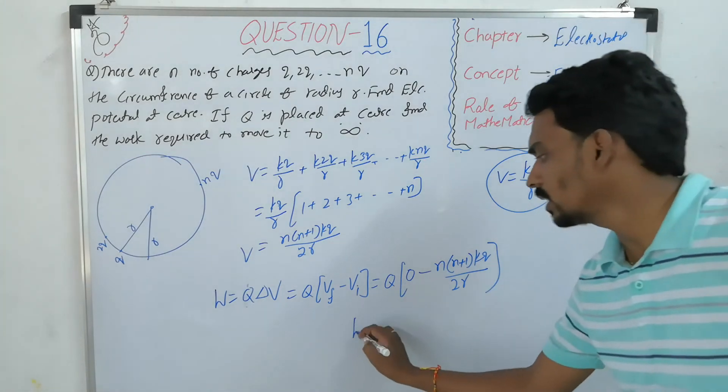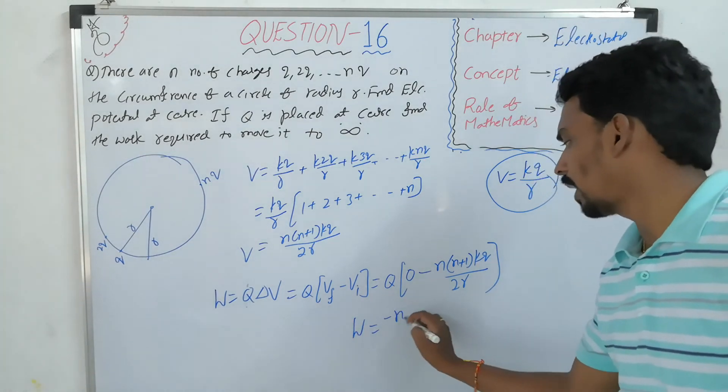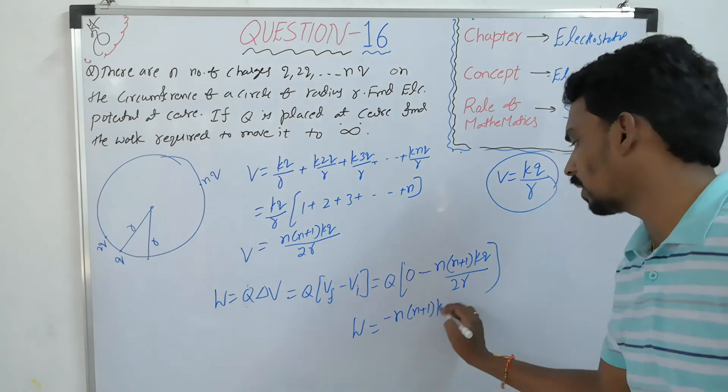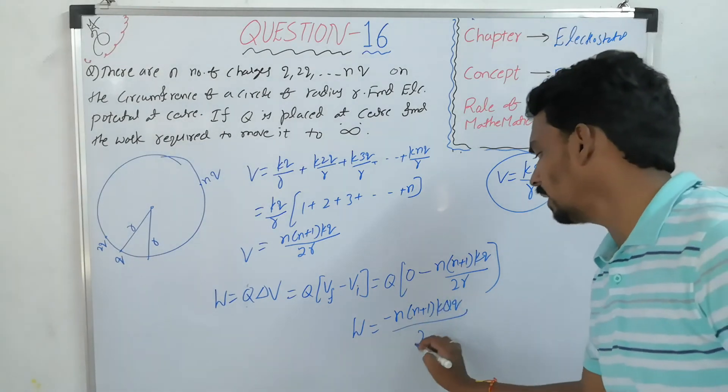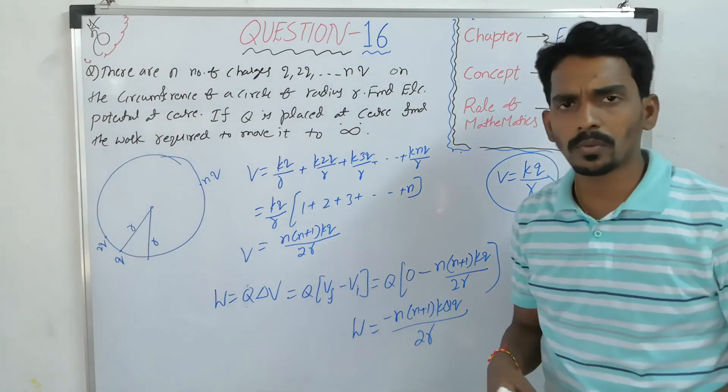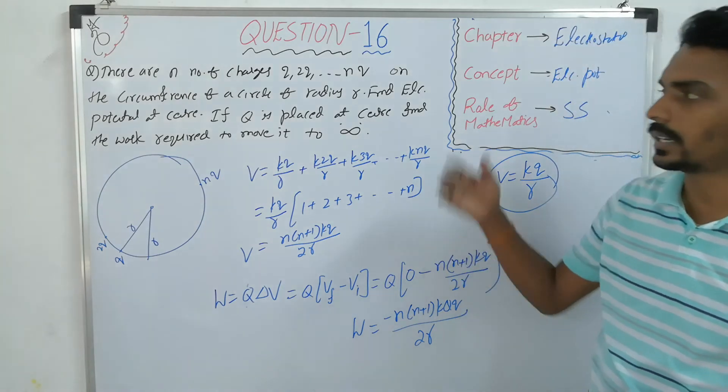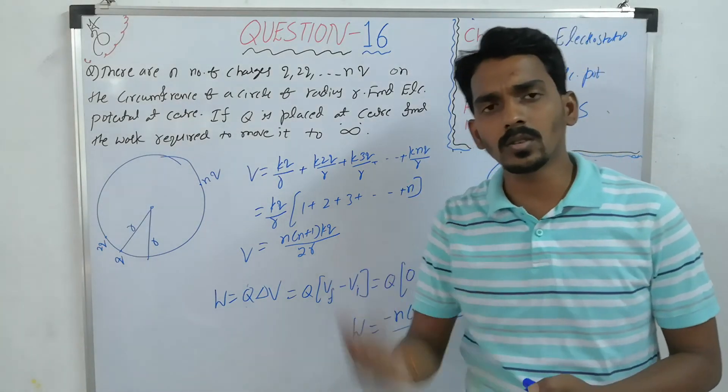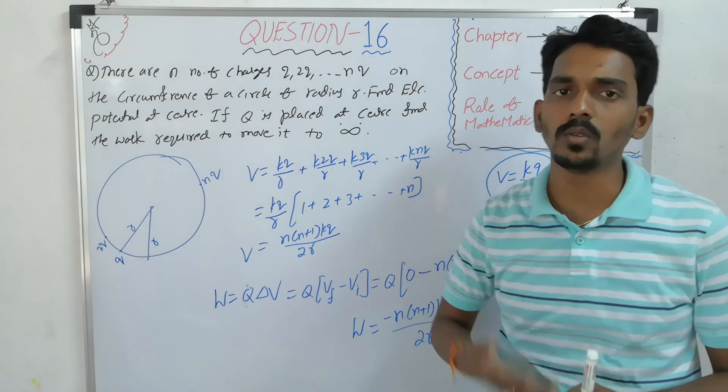So what is the work required? It will become minus N times (N plus 1) times KQ by 2R. So wherever questions are given related to potential, they can also ask questions related to work done.